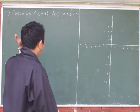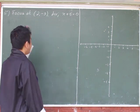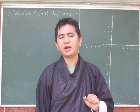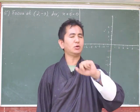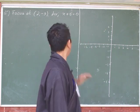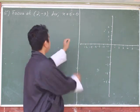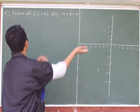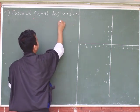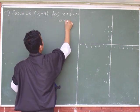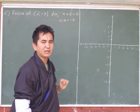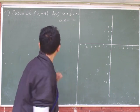In this question, the vertex is not given at the origin. In question number 2 we did a question where the vertex is at the origin, but in this case the vertex is not at the origin. They have given the focus point as well as the directrix. The directrix is at x equals negative 5.